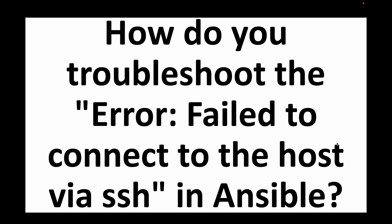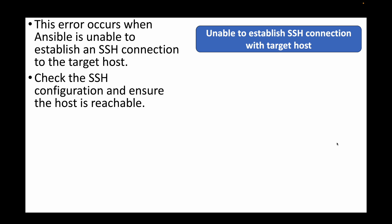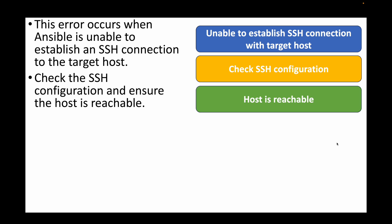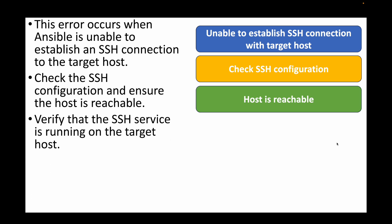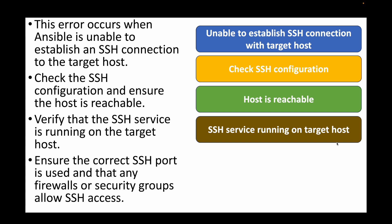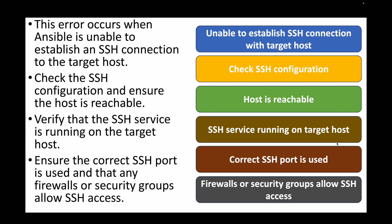The next question is: how do you troubleshoot the error 'failed to connect to the host via SSH' in Ansible? This error occurs when Ansible is unable to connect to the remote machines over SSH. Check the SSH configuration and make sure the host is reachable — do a telnet or ping to verify connectivity. Verify whether the SSH service is running on the target machine, ensure you're using the correct SSH port (22 is the default), and validate any firewall settings or security groups to make sure nothing is blocking SSH traffic.